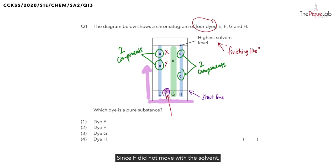Since F did not move with the solvent, it is insoluble in the solvent, hence giving no results. Let's write that down. Now that we've analyzed the results of the chromatogram, let's take a look at the question. We are looking for the dye which is a pure substance.